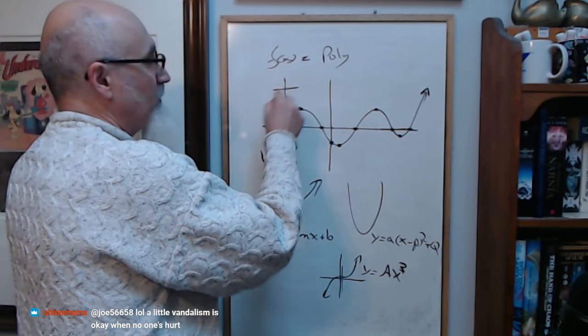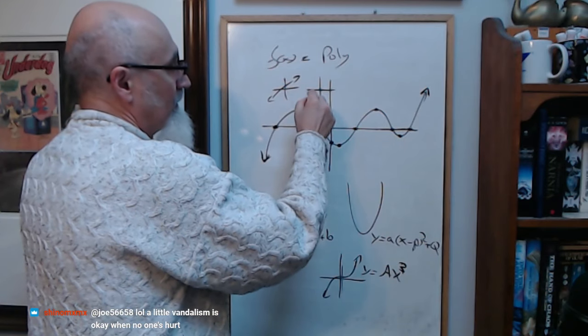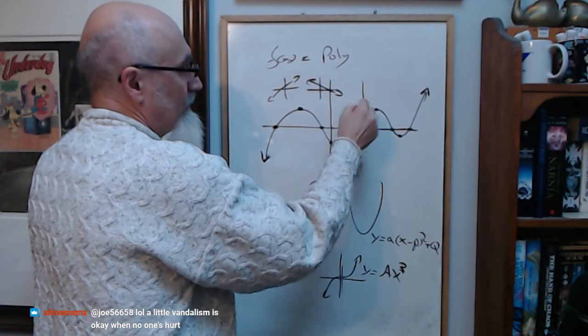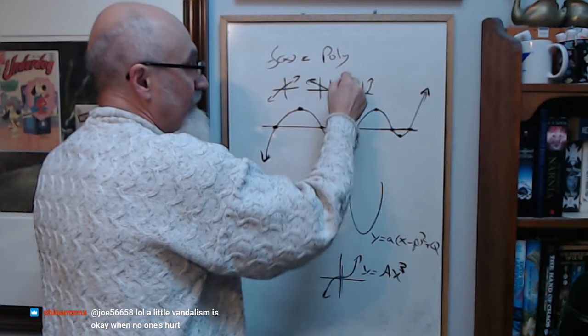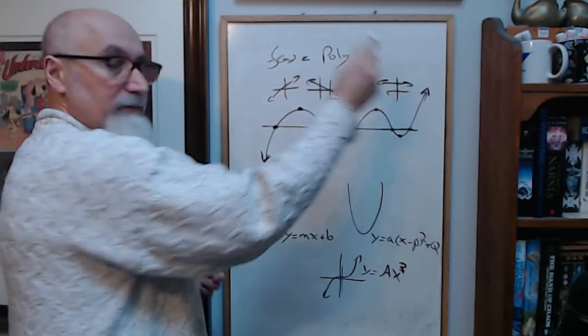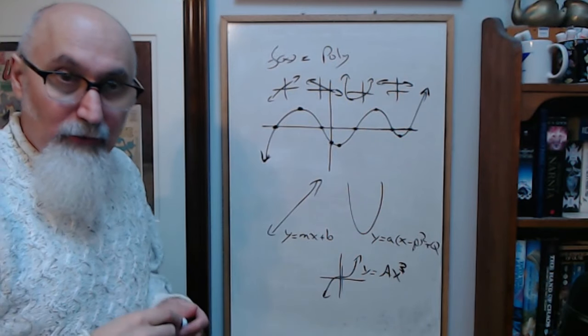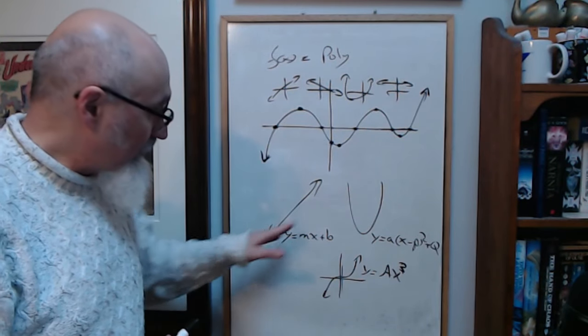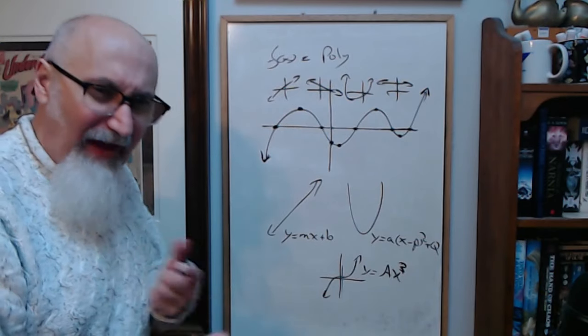So if you take a bunch of linear functions, and whatever, something like this, you multiply them, you get something like this. So you need to sort of break things down through core building blocks, so factoring is important.